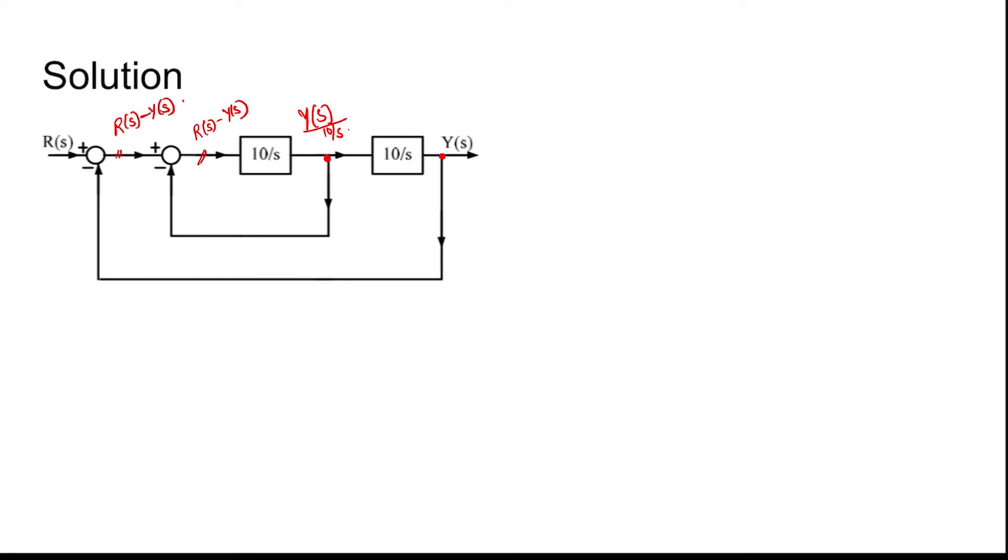So this is r(s) minus y(s), that is, this one minus this signal minus y(s) by 10 by s. Now this into 10 by s is this. So r(s) minus y(s) minus y(s) into s by 10, as this comes up and then 10 down, hold into 10 by s equal to y(s) by 10 by s.